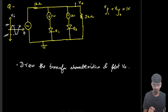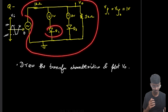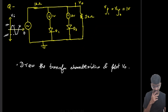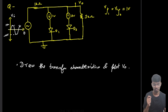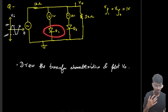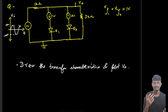Today we will solve this question which has a clipper-like structure with two diodes D1 and D2. The reference voltages are 1 volt and 2 volts, connected in opposite polarities. The input is a sine waveform with amplitudes of plus 10 and minus 10 volts, and the cut-in voltage for both diodes is 1 volt.